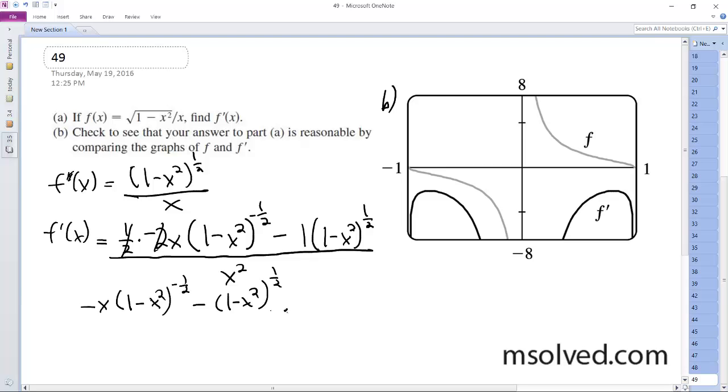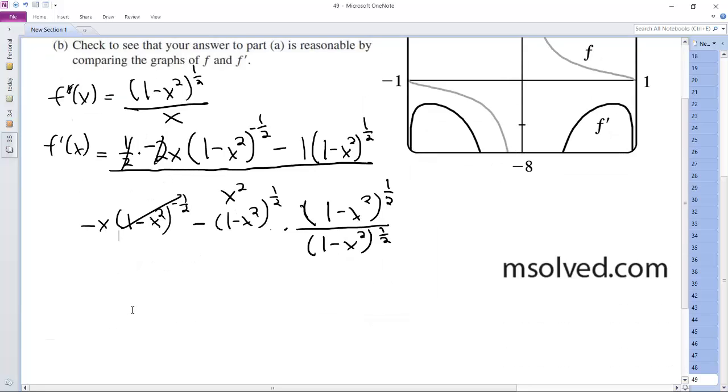So if I multiply the top and bottom by 1 minus x squared raise to 1 half over 1 minus x squared raise to the 1 half, gets rid of this. This becomes just negative 1 minus x squared, so what I end up with here,